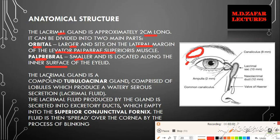Talking about histology: the lacrimal gland is a compound tubular acinar gland comprised of lobules which produce a watery serous secretion known as lacrimal fluid. The lacrimal fluid produced by this gland is secreted into the excretory ducts, which empty into the superior conjunctival fornix — as shown in the diagram, these ducts produce lacrimal fluid into the superior conjunctival fornix.